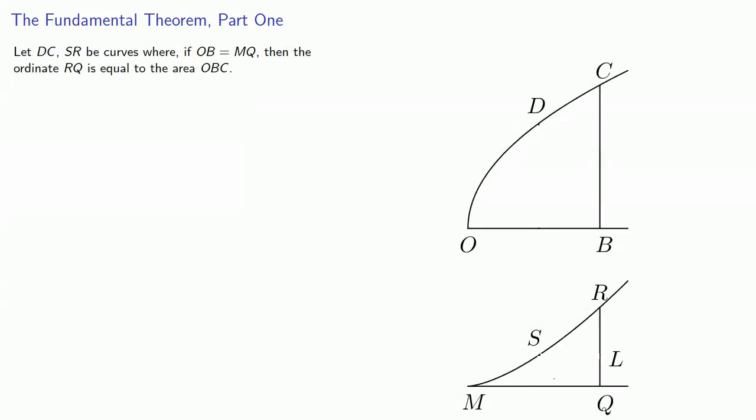Barrow begins with two curves DC and SR where if OB is equal to MQ, the ordinate RQ is equal to the area OBC.